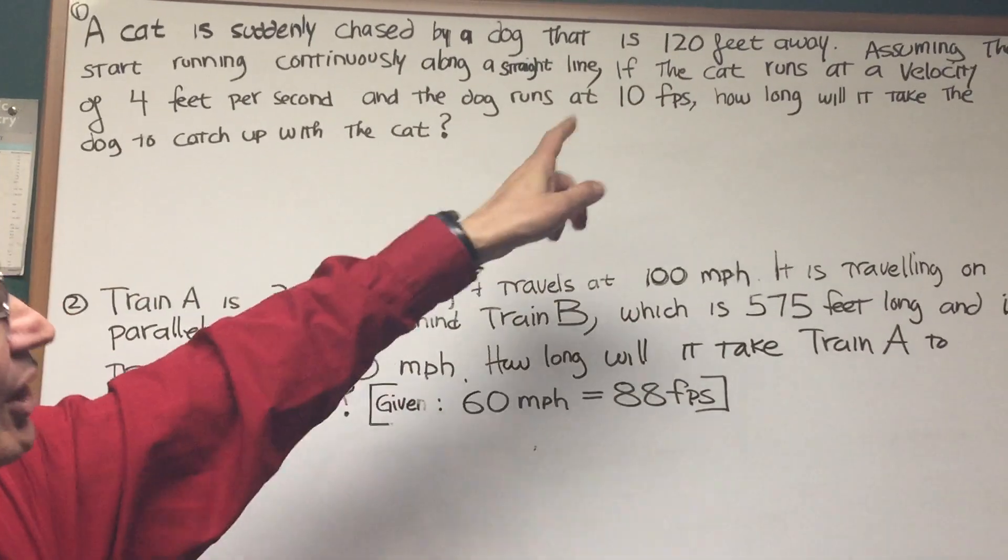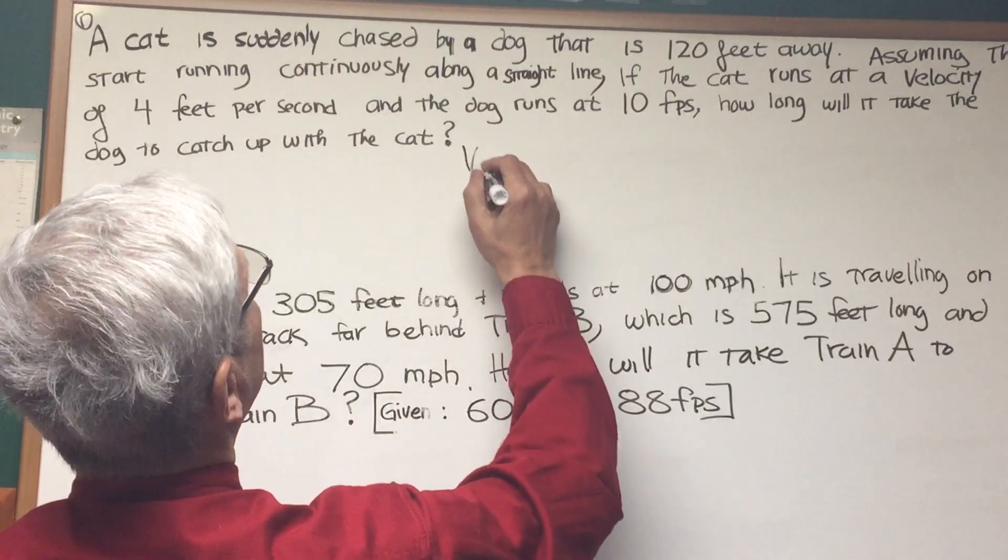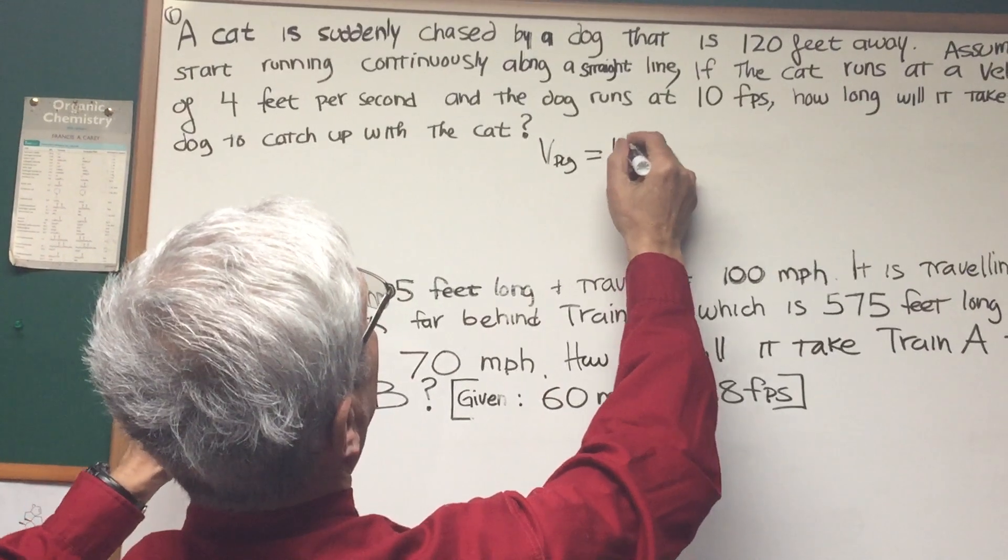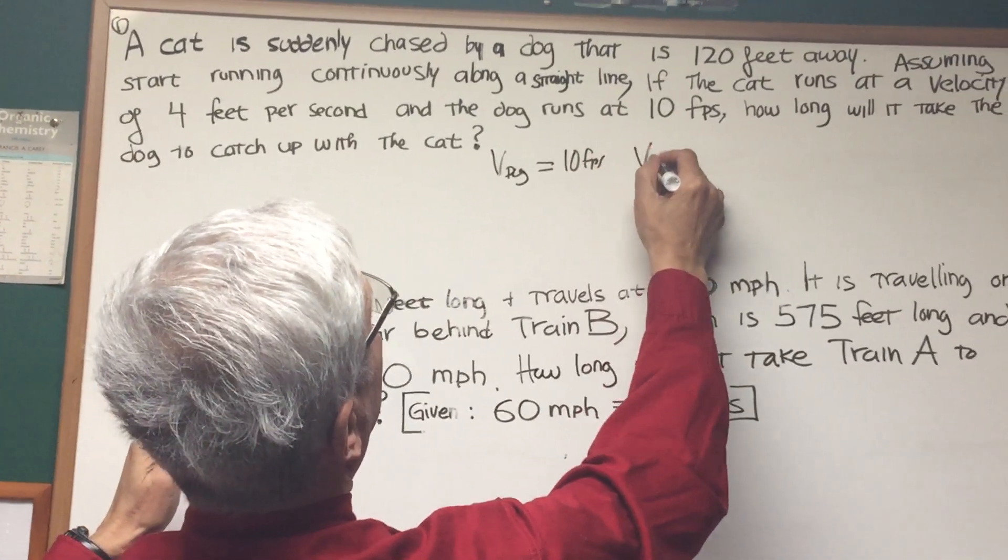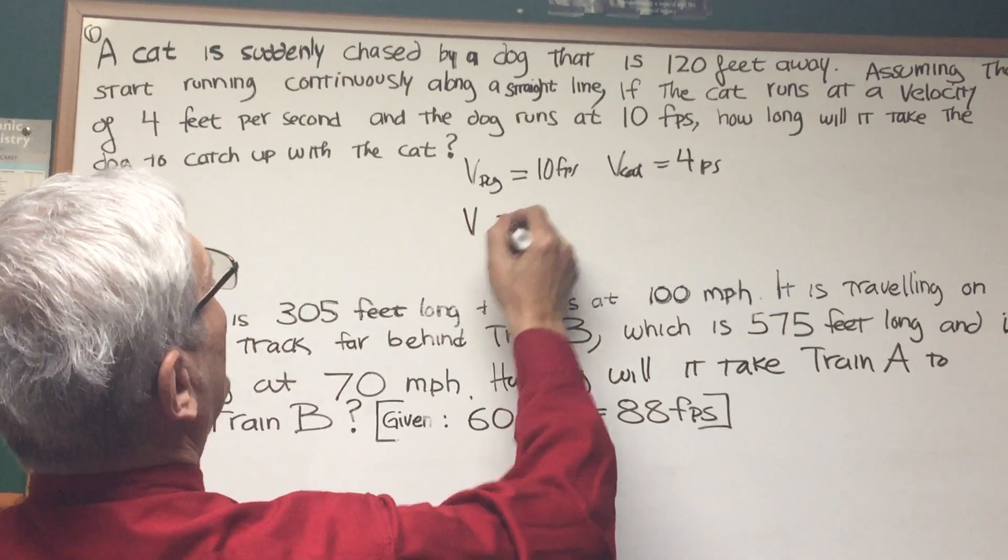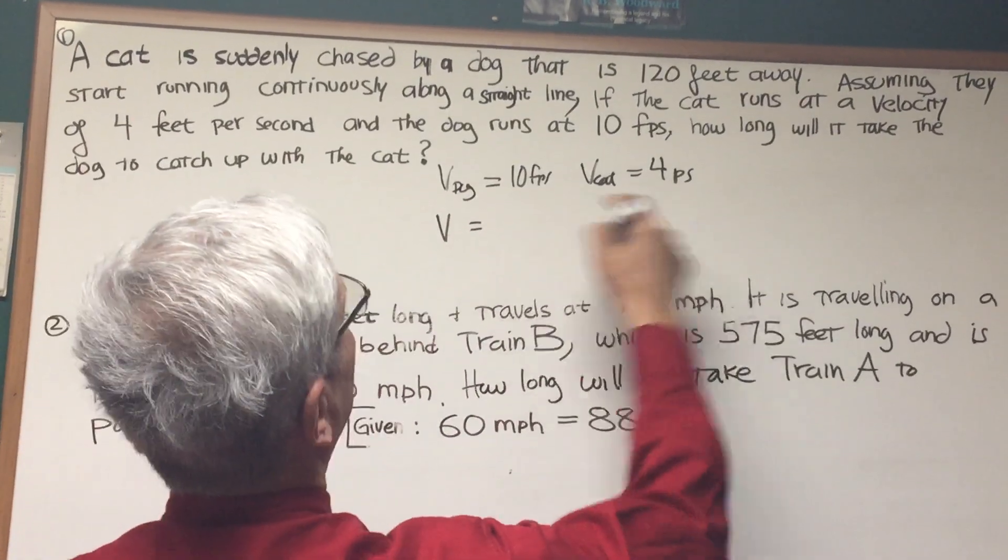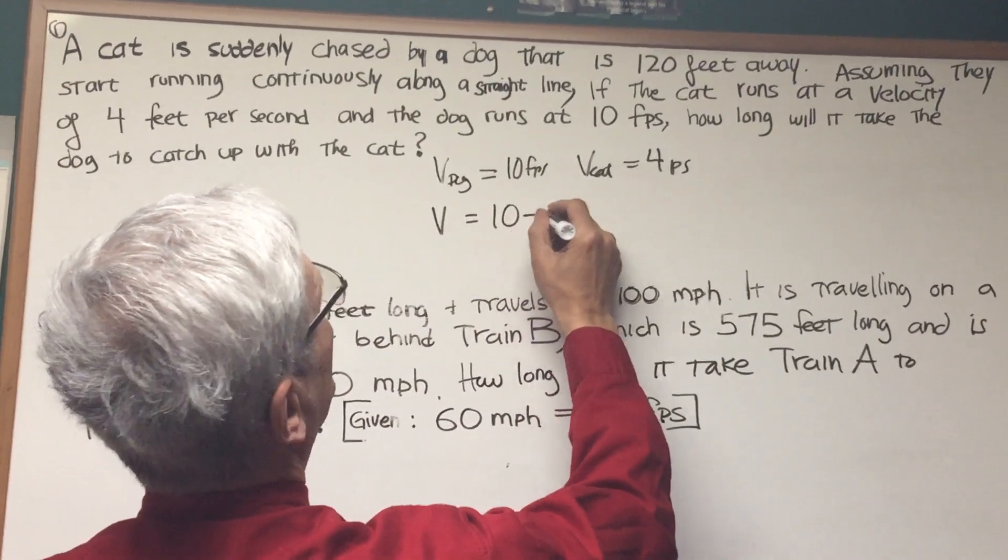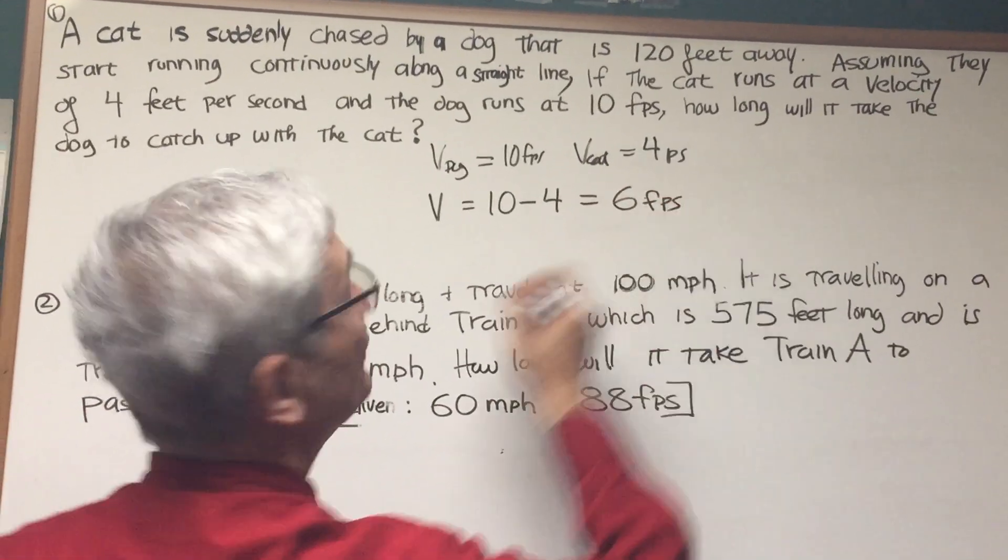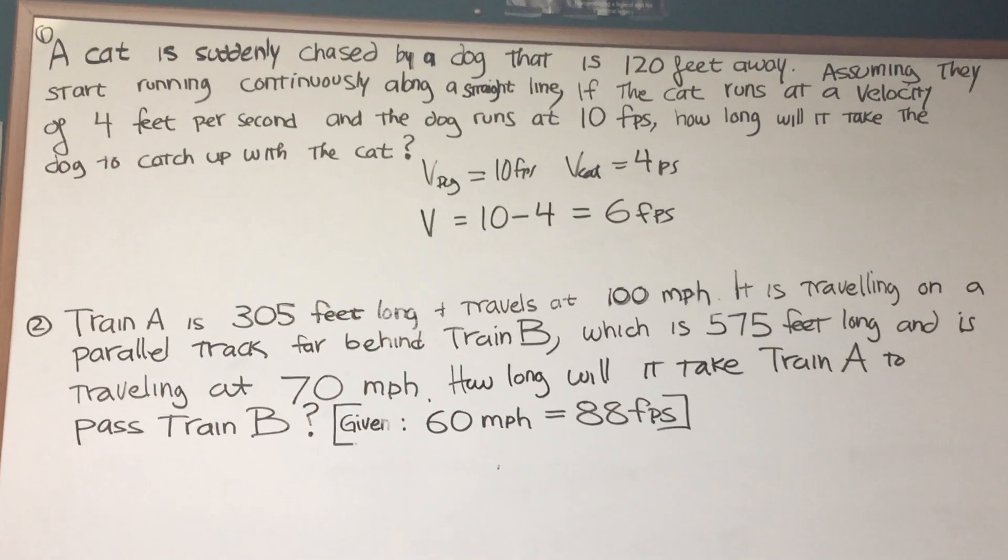What we're interested in is how long it will take the dog to close in on that 120 feet. The dog's velocity is 10 feet per second and the cat's velocity is 4 feet per second. The velocity at which the distance of 120 is being narrowed is the difference between those two velocities because we want the dog's velocity relative to the cat, so that's 6 feet per second.